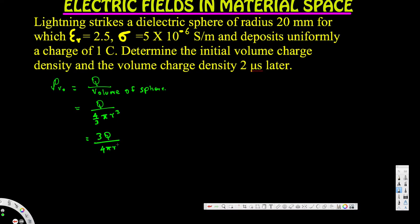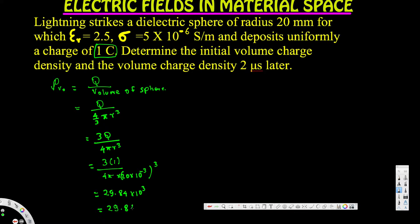Now we plug in the values. The charge Q is one coulomb, so we have 3 times 1 divided by 4 pi, and the radius is 20 millimeters, so times (20 times 10 to the power minus 3) cubed. After calculating, we get 29.84 times 10 to the power of 3, or 29.84 kilo coulombs per meter cubed. This is the initial volume charge density.